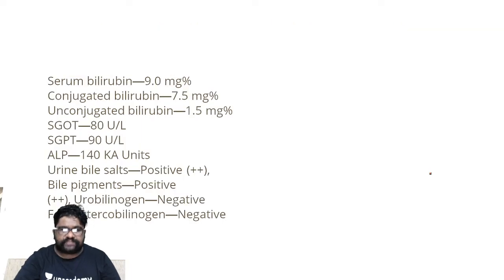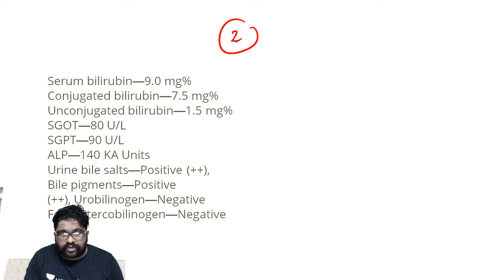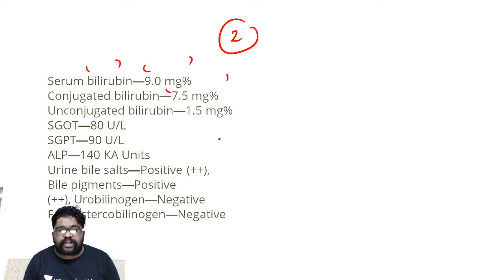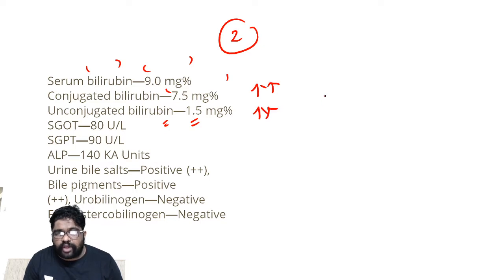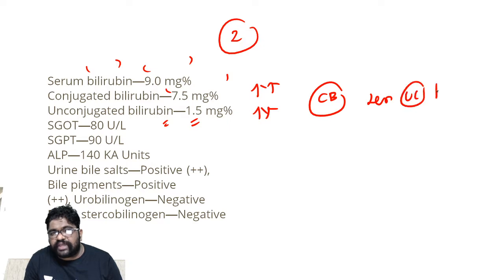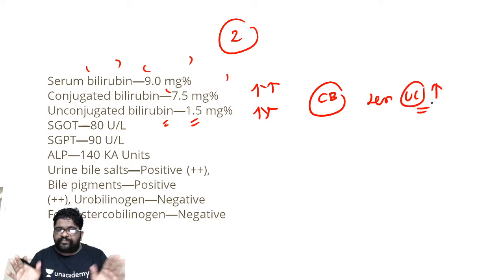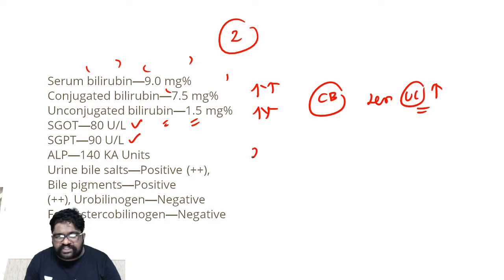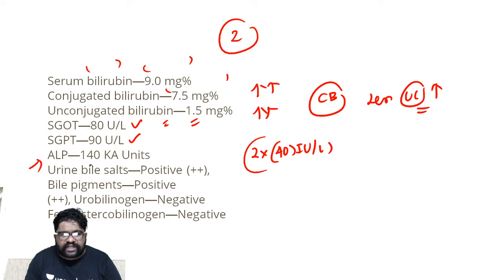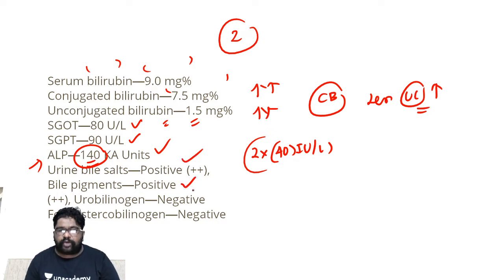This is a different clinical case scenario. Serum bilirubin level is 9 milligrams percent. Conjugated bilirubin is 7.5 milligrams percent. Unconjugated bilirubin is 1.5 milligrams percent — both are elevated, with more conjugated and less unconjugated elevation. SGOT and SGPT levels are just two times the high normal level of 40 international units per liter. ALP level is 140 King-Armstrong units, while urine bile salts are positive, bile pigments are positive, urobilinogen is negative, and fecal stercobilinogen is negative.